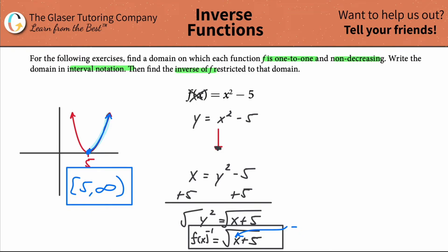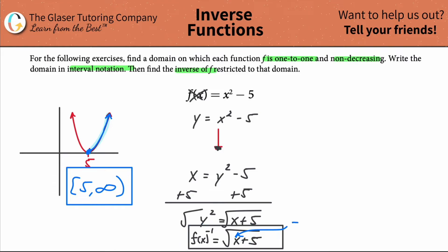For example, if you plug in negative six, then under the radical you'd have negative one — and we can't take the square root of that, because no two numbers multiplied by themselves give you a negative value. A negative times a negative is positive, and a positive times a negative is negative, so it can't happen. So we are restricted here a little bit, and the domain of this inverse function is negative five all the way out to infinity.